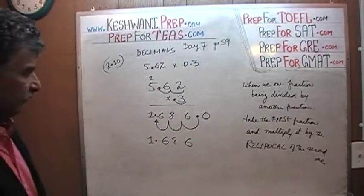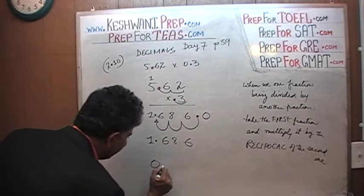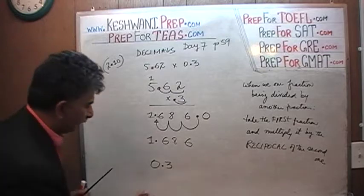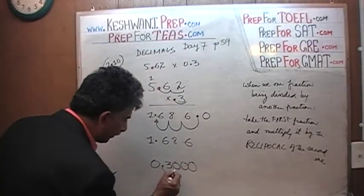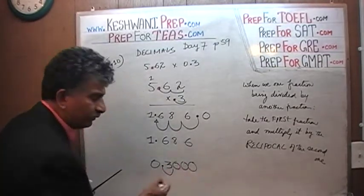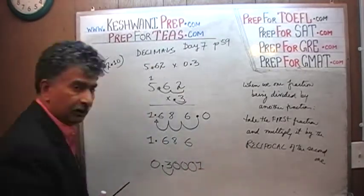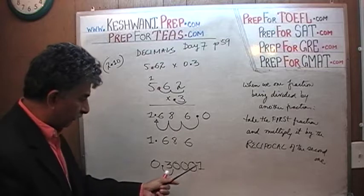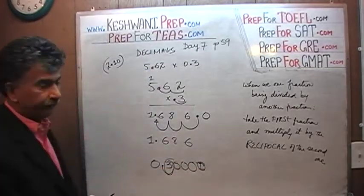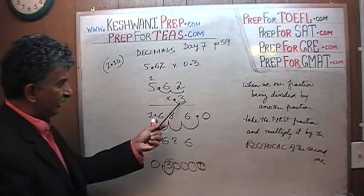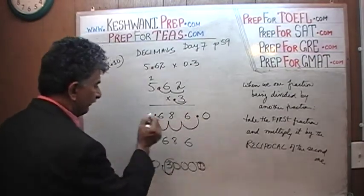Just count the decimal places. 0.3 is just 0.3 — if you insert zeros after that, they do not count unless there happens to be a non-zero digit. Those trailing zeros do not count; it's still only one decimal place. So you have 2 decimal places in 5.62 and 1 in 0.3, making 3 decimal places total — just move the decimal 3 places. That's all.